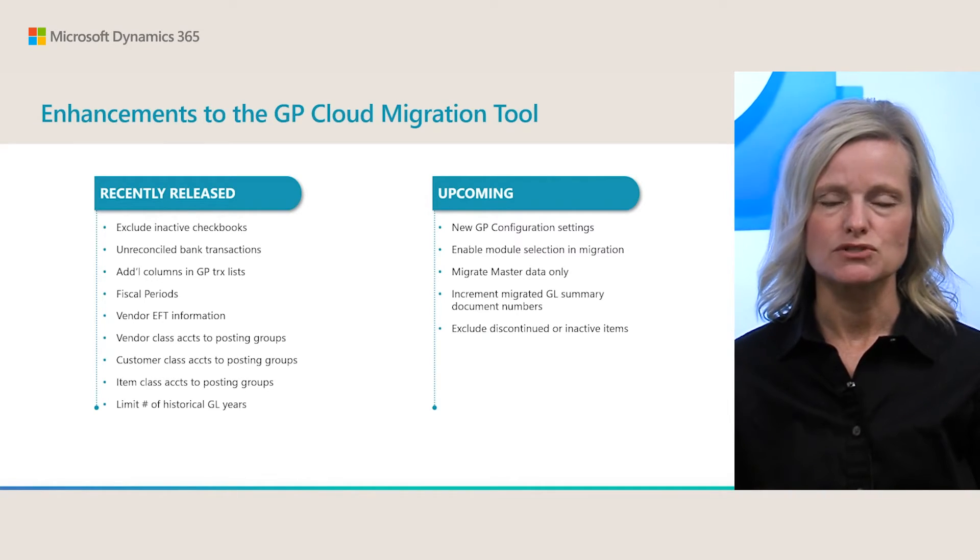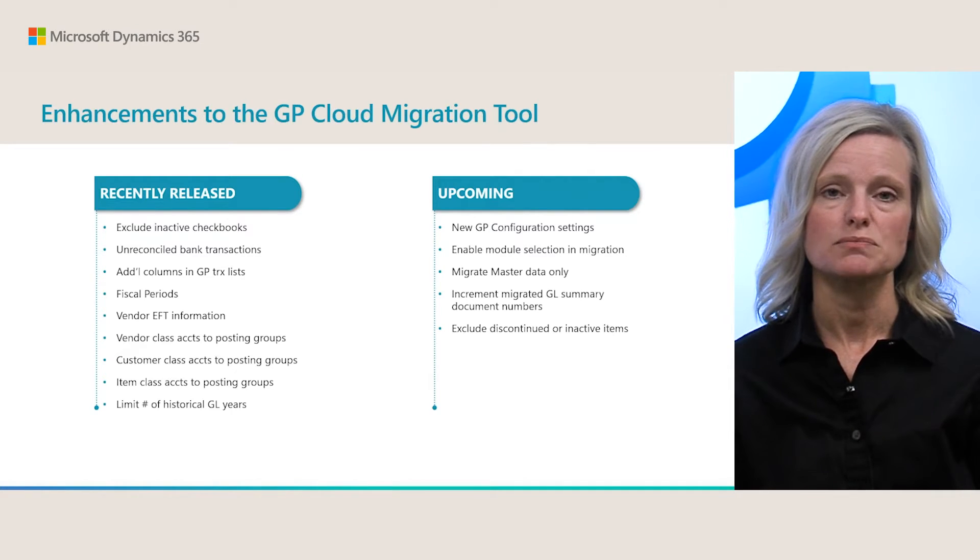As part of Wave 2 2022, you can expect the new GP configuration page giving you a lot more flexibility to pick and choose the information you want to bring over. You can select which modules to migrate — perhaps just GL and AP, leaving receivables in GP. You can choose to bring only master data per module, or exclude discontinued or inactive items. Also, based on feedback, GL summary records were all being assigned the same document number making it difficult to reconcile or reverse specific transactions, so now we will increment that document number for individual GL summary records.